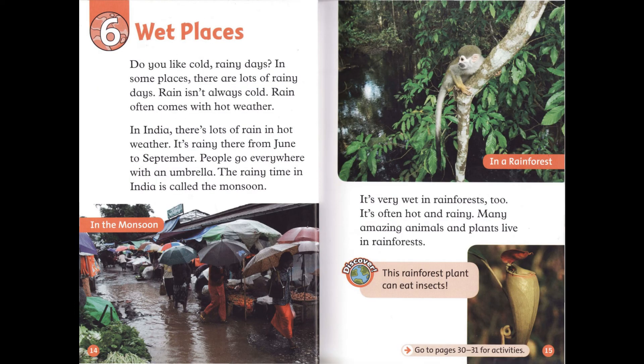Chapter 6: Wet Places. Do you like cold, rainy days? In some places, there are lots of rainy days. Rain isn't always cold — rain often comes with hot weather. In India, there's lots of rain in hot weather. It's rainy there from June to September. People go everywhere with an umbrella. The rainy time in India is called the monsoon.